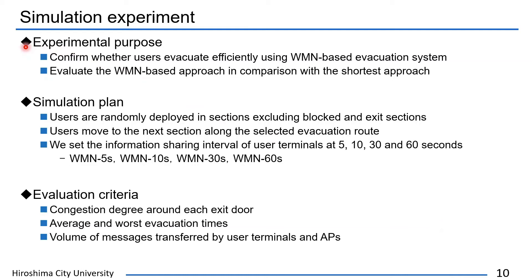Next, I'll explain about the simulation experiment. We confirmed whether users evacuate efficiently using the wireless mesh network based evacuation system and evaluated the wireless mesh network based approach in comparison with the shortest path approach. Initially, users are randomly deployed in sections excluding blocked and exit sections. Users move to the next section along the selected evacuation route. In the simulation experiment, we set the information sharing interval of user terminals at 5, 10, 30, and 60 seconds.